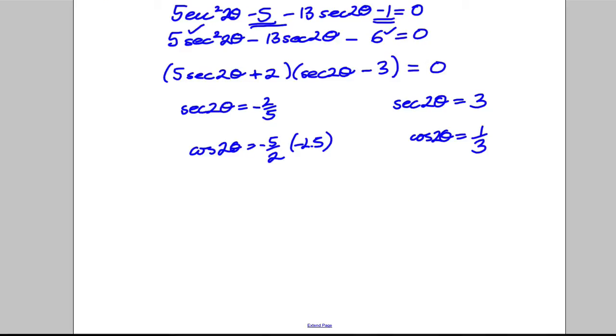Now, I'm not going to get any answers from this, because cosine is always between 1 and negative 1, so I'm going to ignore this and say that there are no solutions. Okay, but I get all my solutions from here.